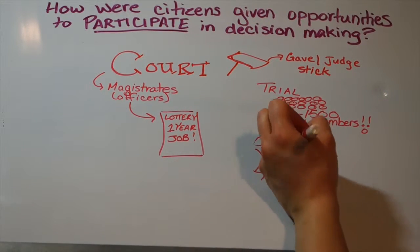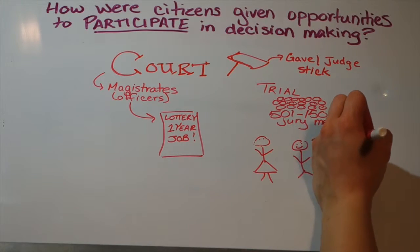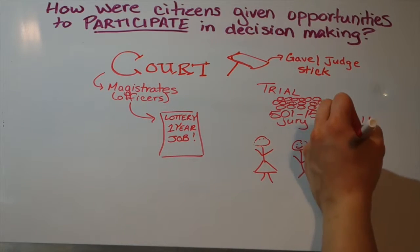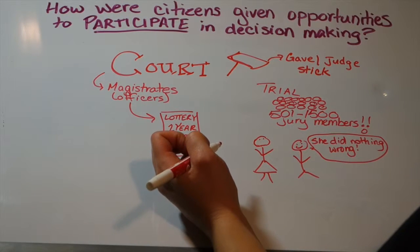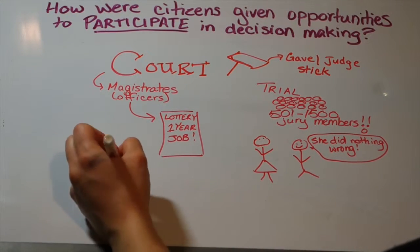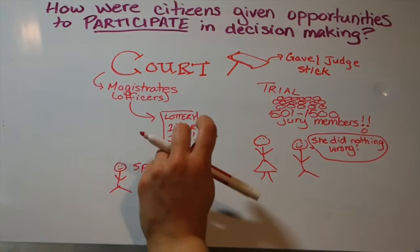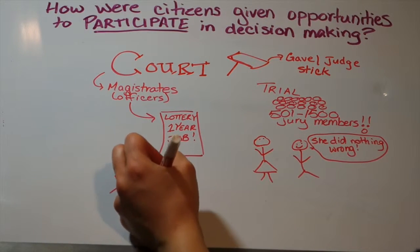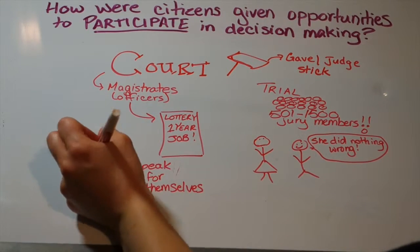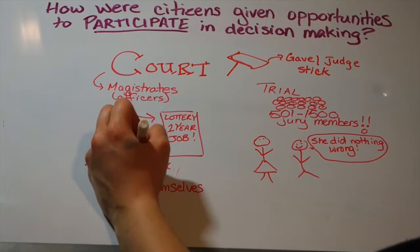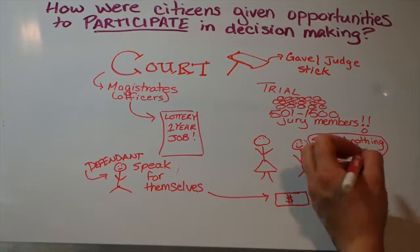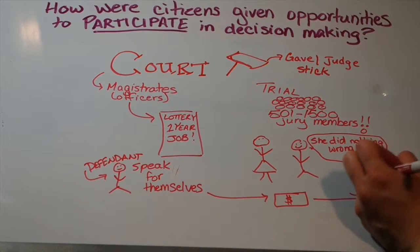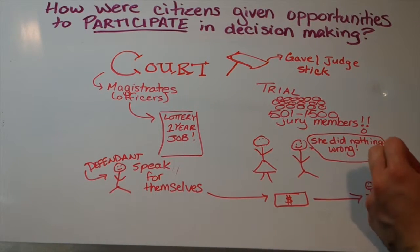Women could be defendants in a trial, but they weren't allowed to speak for themselves — they had to have a man do it for them. Most often, defendants in a trial could speak for themselves, and most often they did. But for those who were wealthy enough, they could have someone speak for them. So if someone was known for speaking well, they would hire them to help win their case.